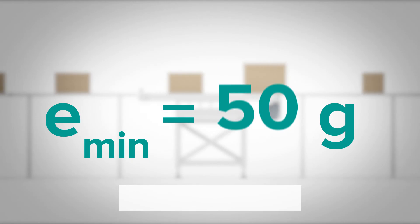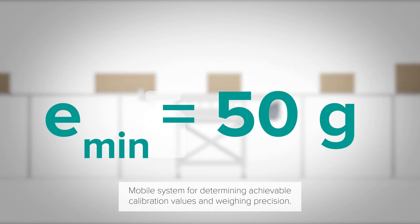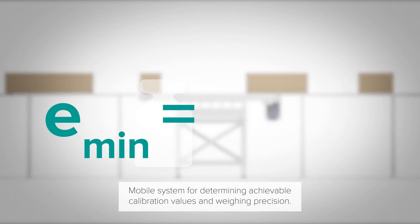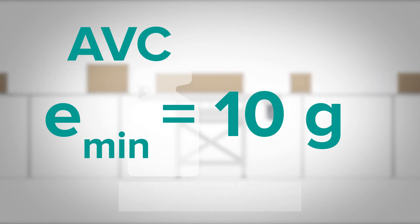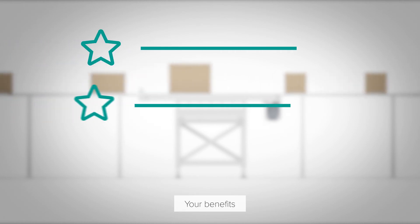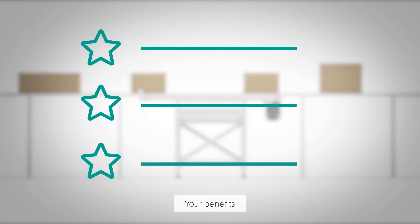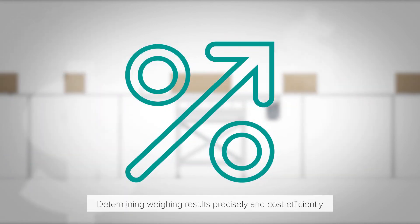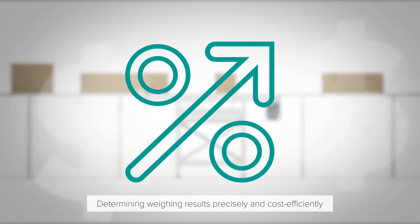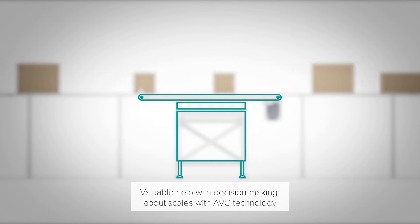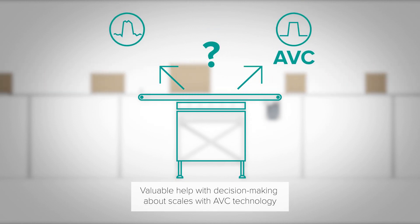It also allows you to determine in advance the potential for improvement with AVC technology, a solution for active compensation of vibrations. Your benefits: weighing results in an existing infrastructure can be determined precisely and cost-efficiently. The tool provides valuable help with decision-making regarding the use of AVC technology. You achieve better calibration values and obtain higher billing accuracy.